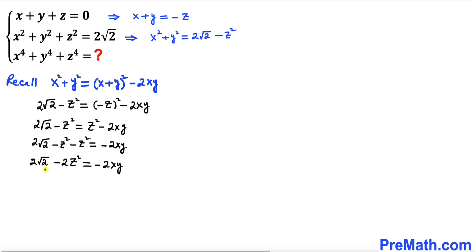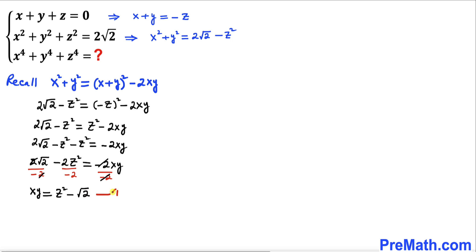Now let's divide across the board by negative 2. Dividing both sides by negative 2, the negative 2 on the right cancels, so xy equals z squared minus square root of 2. Let's call this equation number 1.